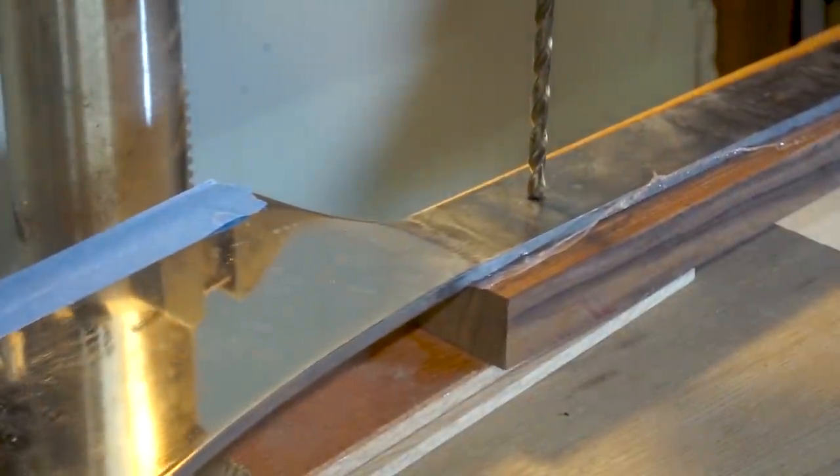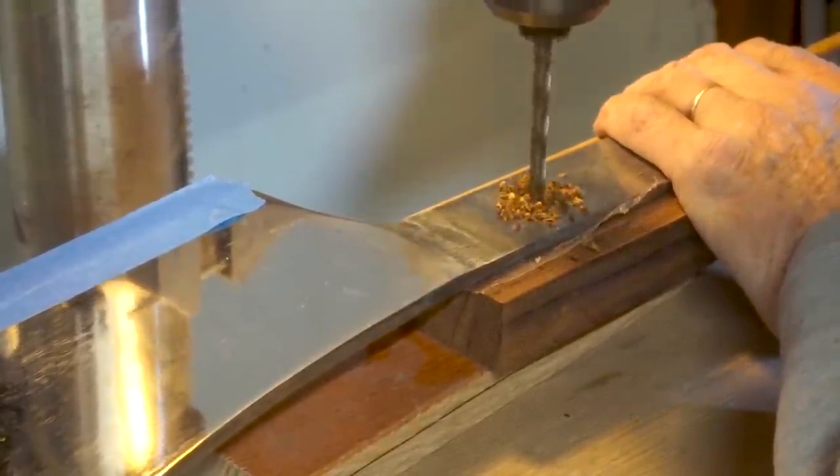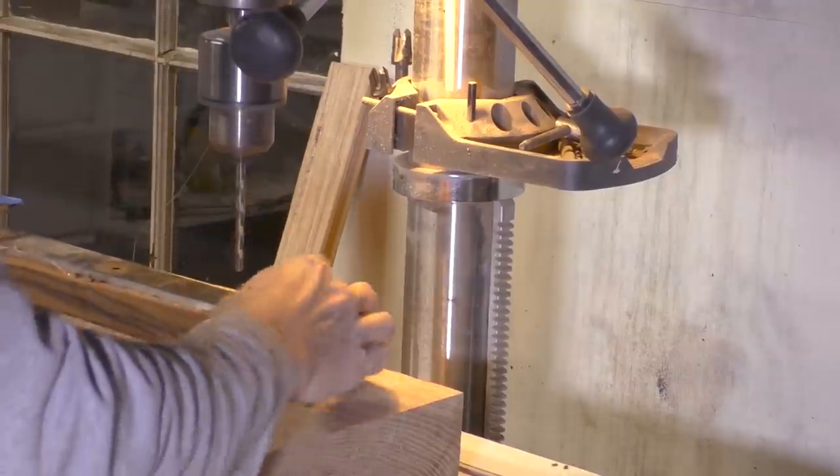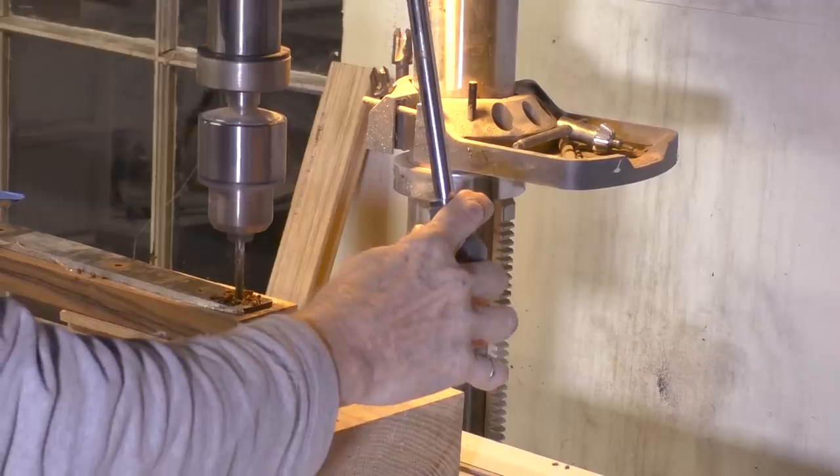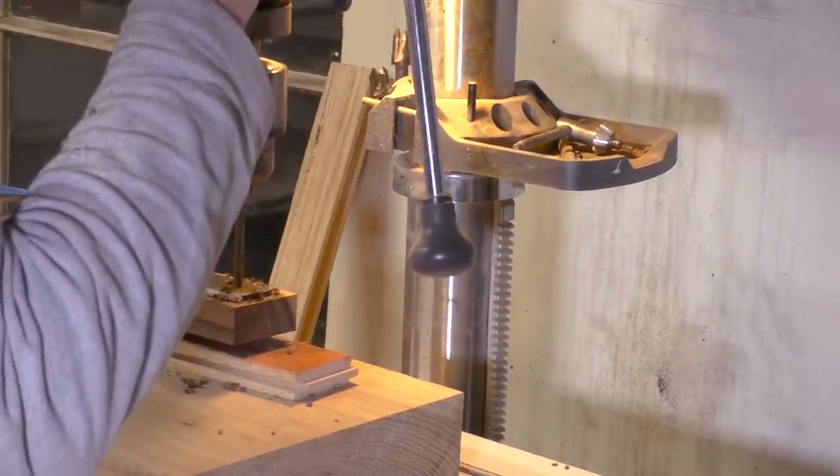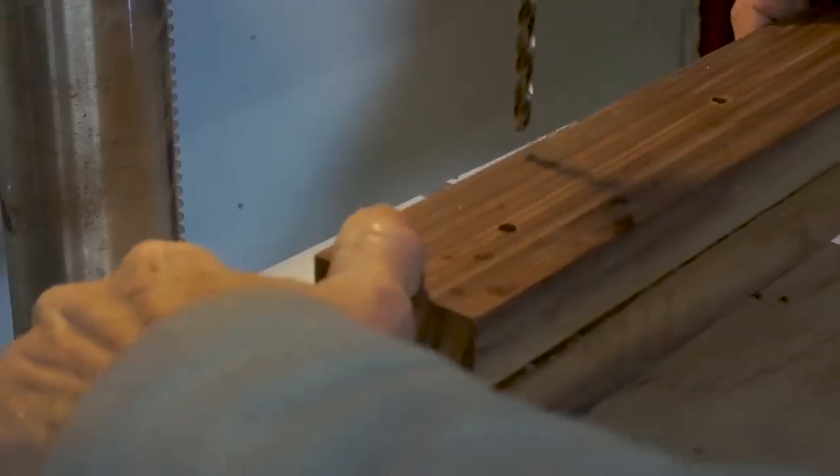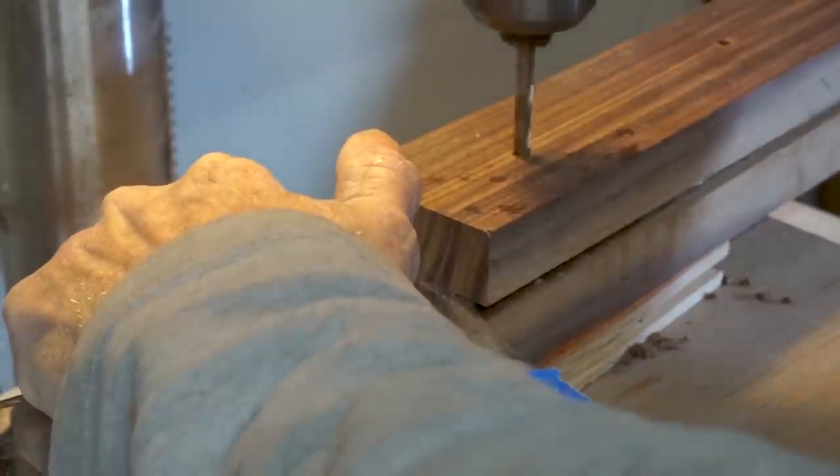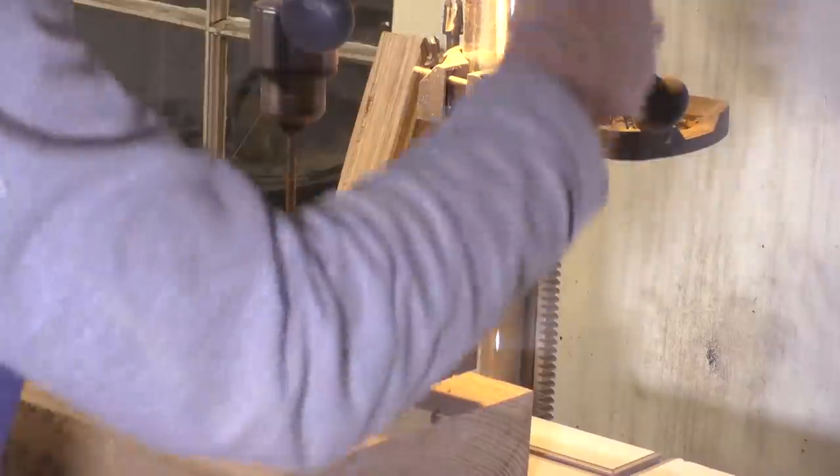I didn't record this part but I already drilled through the existing holes on the tang and I increased them to be a quarter inch in diameter. After drilling through the first scale, I attach the other scale with double-sided tape and then I flip it over, use the holes that I just drilled so that I can drill all the way through and have the holes lined up.